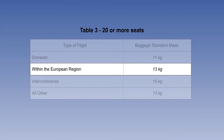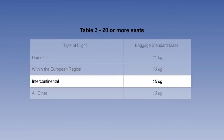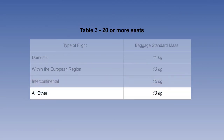The second type of flight is titled 'within the European region', which means flights other than domestic whose origin and destination are within a specified area of Europe detailed in EU Ops 1, with a standard baggage mass of 13 kilograms. The third type is titled 'intercontinental', meaning a flight with origin and destination in different continents, with a baggage standard mass of 15 kilograms. The final type is called 'all other', with a baggage standard mass of 13 kilograms.